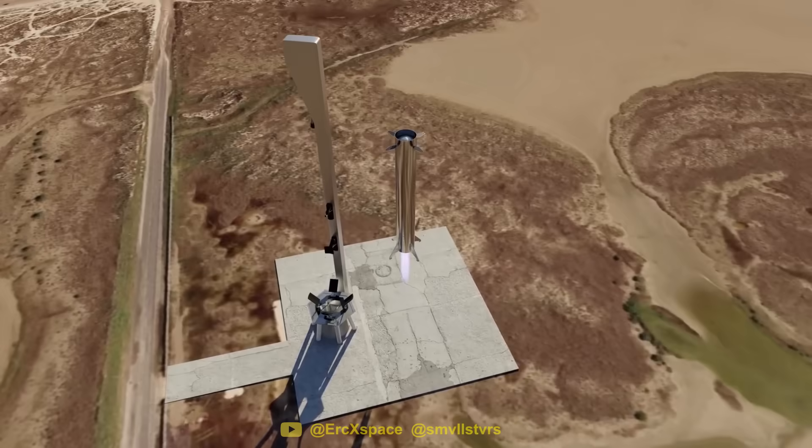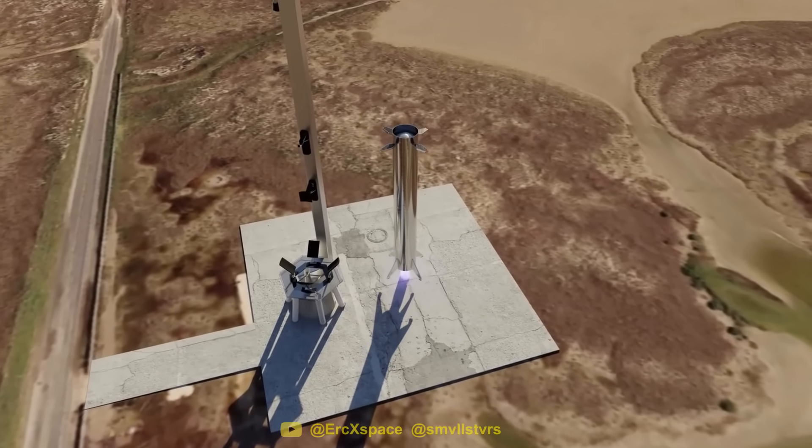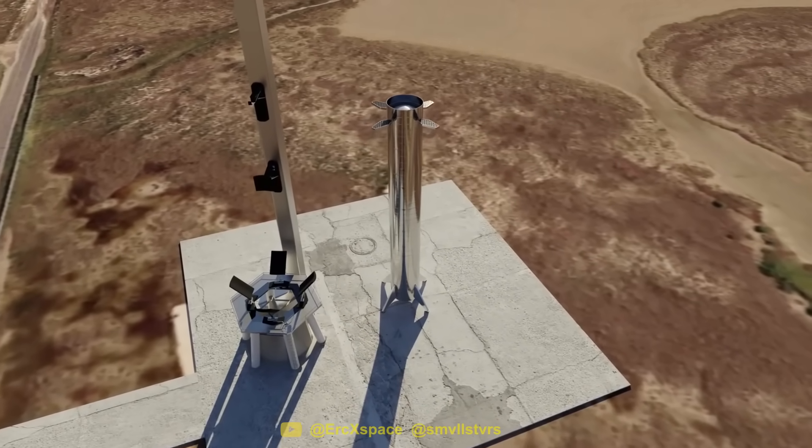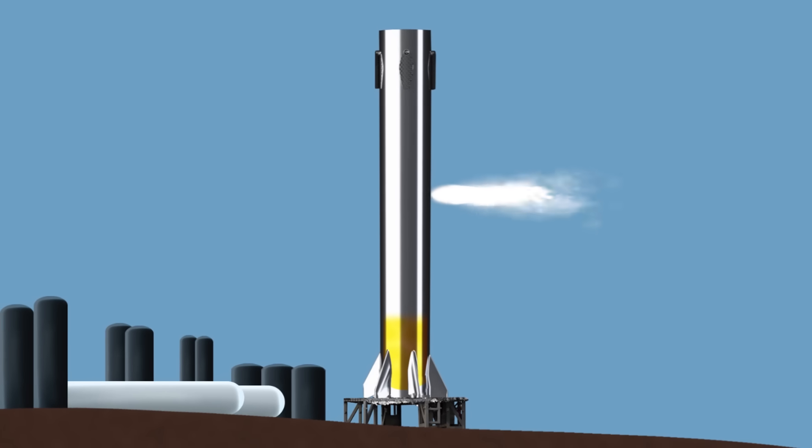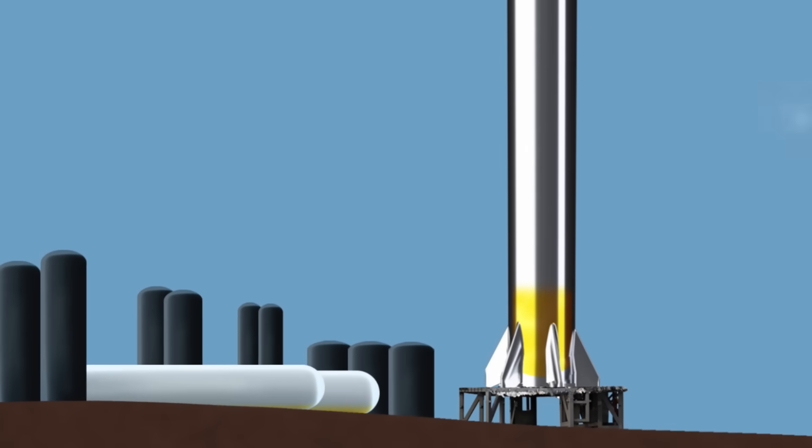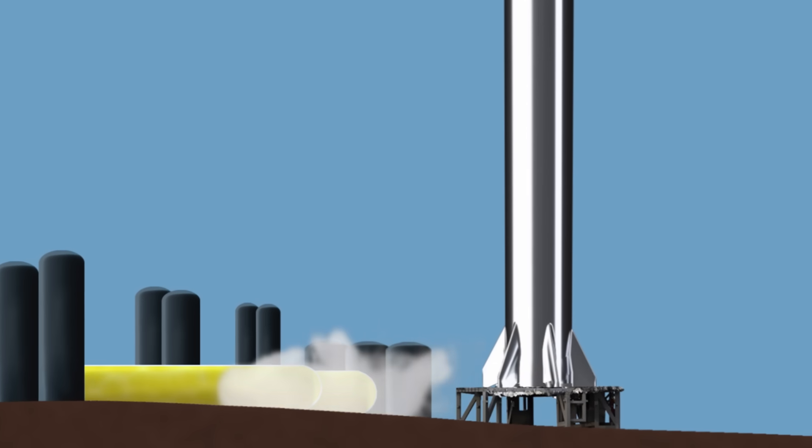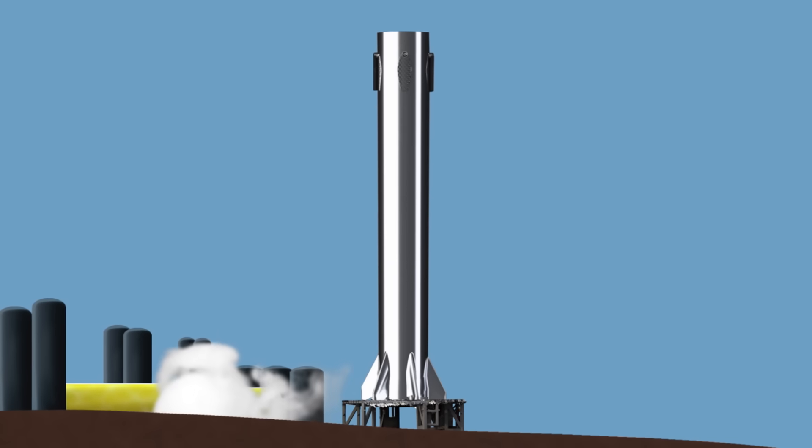After all, the detanking process is especially important for Starship since it will still contain excess methane after it lands. Methane isn't allowed to be vented into the atmosphere, so SpaceX plans to pump the leftovers back into the tank farm for it to be recondensed and used for the next flight.